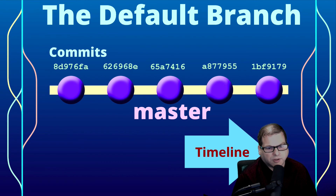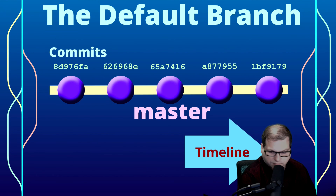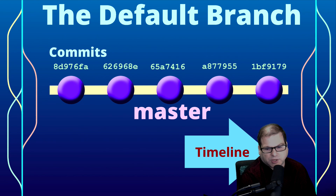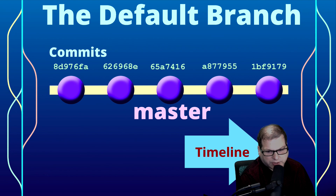By default, when you create a new repository, you get a branch called master. Technically, we can rename the master branch, but we almost never do. It's a convention I like to keep because that way you don't confuse anybody that's already familiar with expecting a master branch. Now let's take a look at the master branch.